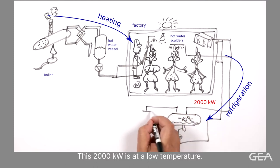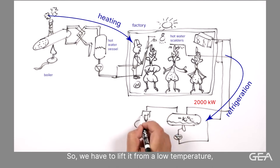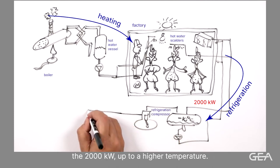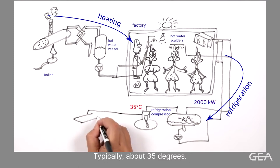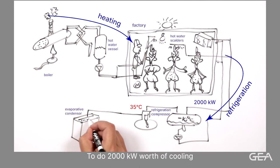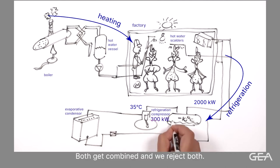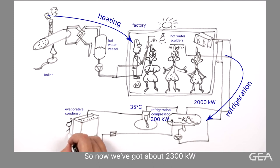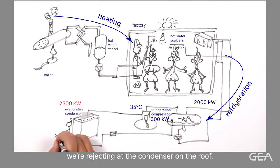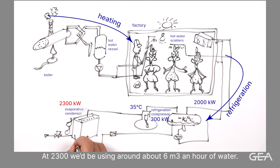This 2,000 kilowatts is at a low temperature. So the refrigeration process means we have to reject it to the outside air. So we have to lift it from a low temperature, the 2,000 kilowatts, up to a higher temperature, typically about 35 degrees. But it takes energy to do that via your refrigeration compressor. So to do 2,000 kilowatts worth of cooling, we have to put in another 300 kilowatts worth of electrical power in the refrigeration compressor. Both get combined and we reject both. So now we've got about 2,300 kilowatts we're rejecting at the condenser on the roof. And to reject that amount of heat we have to evaporate water. And at 2,300 we'd be using around about 6 cubic metres an hour of water.